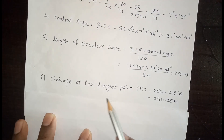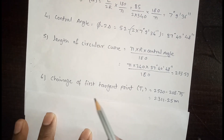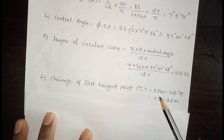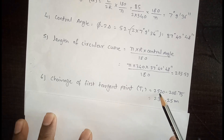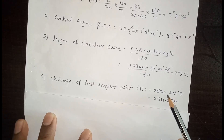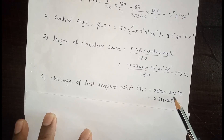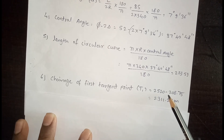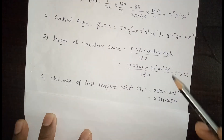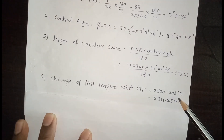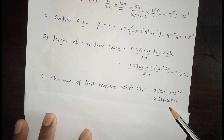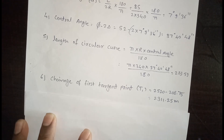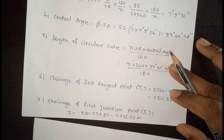The chainage of the first tangent point T1 equals the intersection chainage minus the tangent length. So: 2520 − 208.75 = 2311.25 meters. The chainage of T1 is 2311.25 meters.